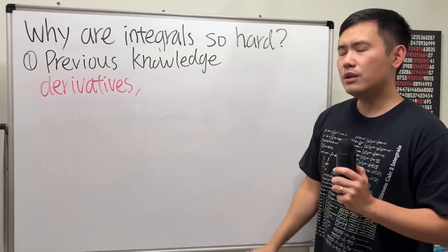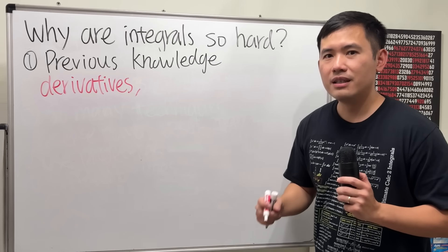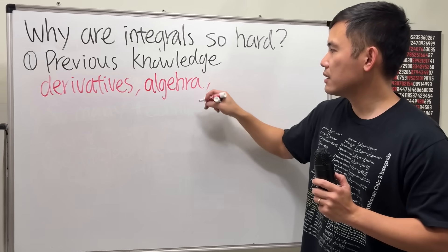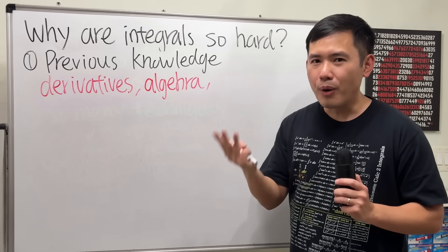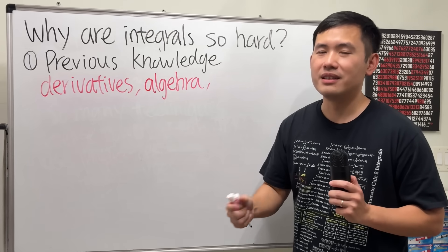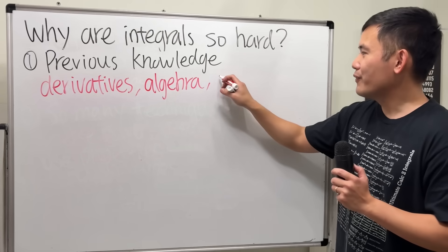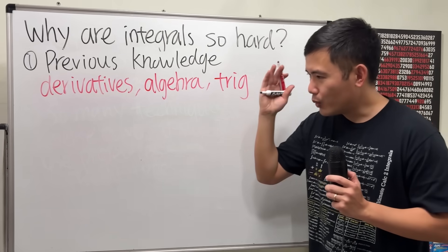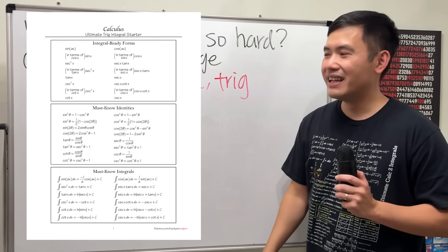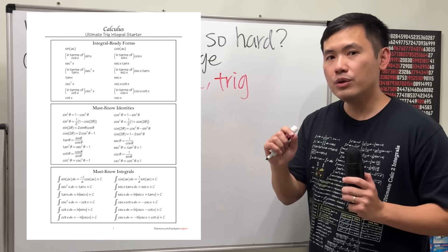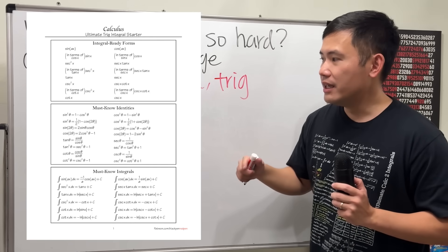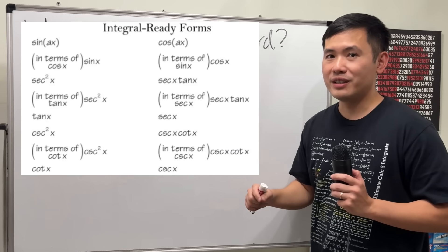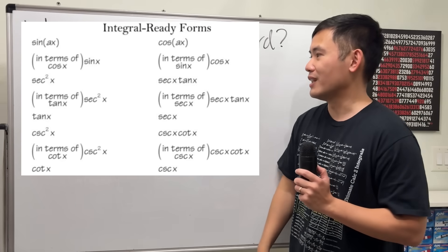Next, when we do integrals, of course there are so many steps, in particular, the algebraic steps. Factoring, completing a square, partial fraction decomposition, etc. Of course, next, how can we forget about trig? All these identities are crucial for doing integrals. In particular though, we need to know how to go from one trig expression into what I call the integral-ready form in order to be integrated. Go ahead and check out this file on my Patreon if you would like.